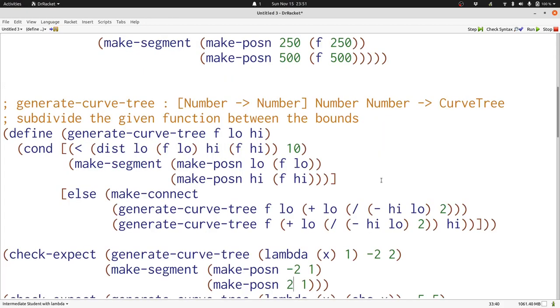The crucial part of generate curve tree is the termination argument. Why does this always produce a curve tree instead of running forever? The answer is that as long as we keep making the distance between low and high smaller, eventually our function will have to produce distances that are smaller than 10.